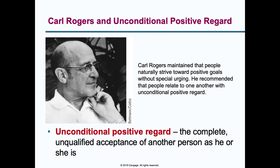The most influential humanistic psychologist to remember is Carl Rogers. His biggest idea is called unconditional positive regard — the complete, unqualified acceptance of another person as he or she is. In other words, even if you disapprove of someone's actions or intentions, you still accept and love them. Anyone who's a parent can think of this as 'no matter what my child does, I will still accept and love them.' I look at people positively despite disapproving of something they're doing or saying.